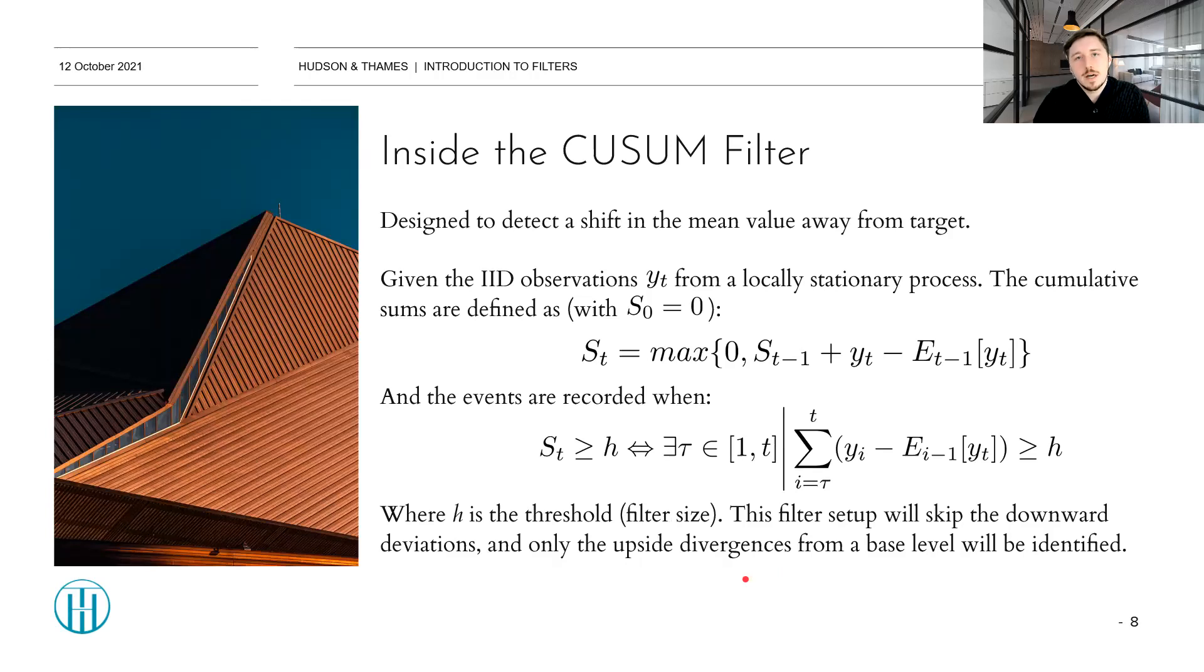What's going on inside the CUSUM filter and how does it work? Originally, it was designed to detect a shift in the mean value away from its target. Say we have a set of IID observations Y_t that are taken from a locally stationary process. The cumulative sum can then be defined as following, which is the maximum between the zero and the previous cumulative sum plus the current observation minus the previous mean of set observations, with the boundary condition being that the zeroth cumulative sum is equal to zero.